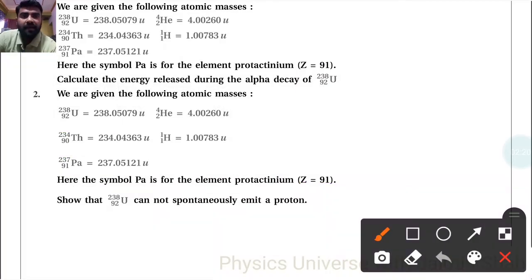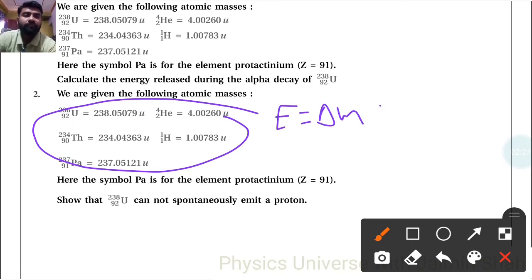So by these values, again our energy we are finding. So delta m into c squared, delta m is mass of uranium minus mass of Pa, protactinium, minus mass of hydrogen into c squared.